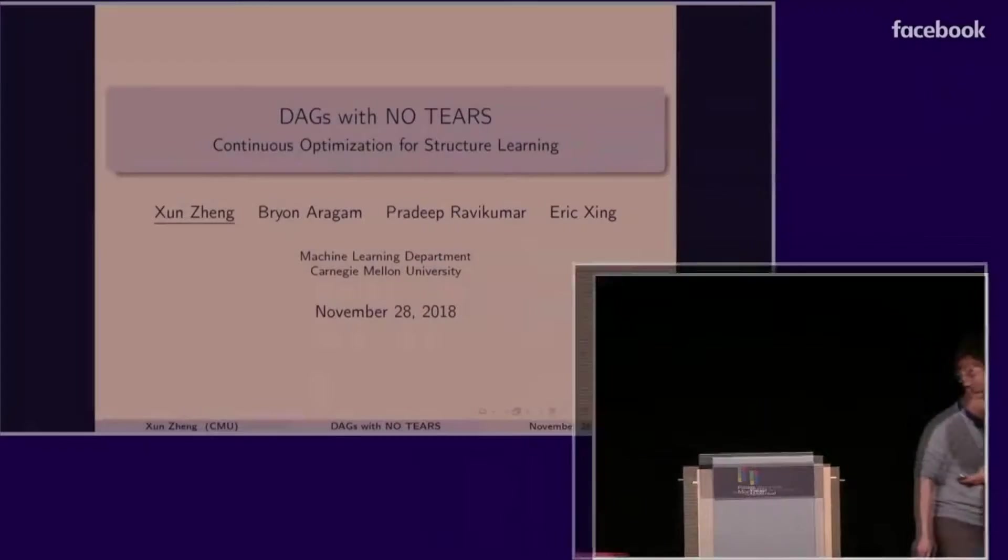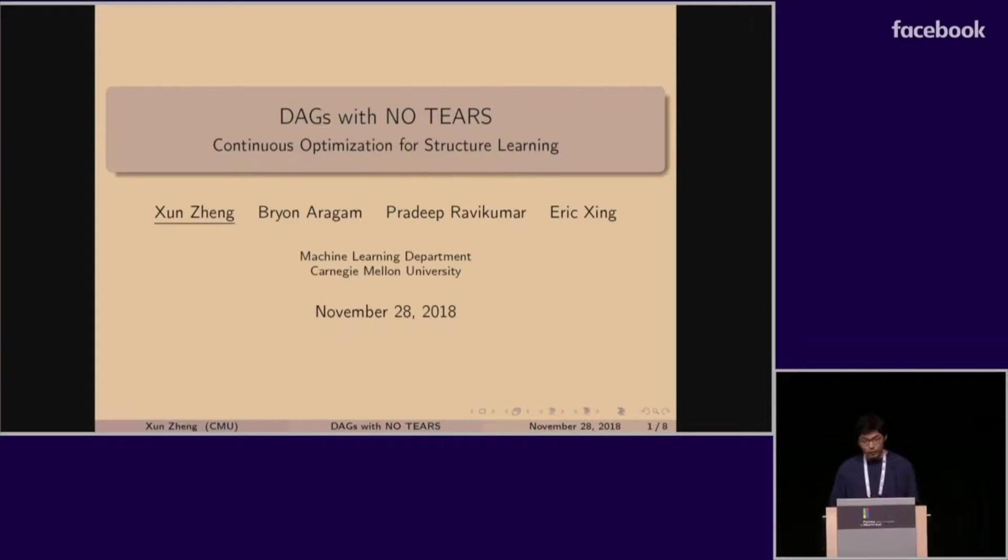All right, so we have one more round of Spotlight Talks, and we will open with Shun Zen. He'll present on DAGs with no tears, continuous optimization for structure learning. All right, thank you. I'm Shun. This work is about Bayesian network structure learning using continuous optimization.